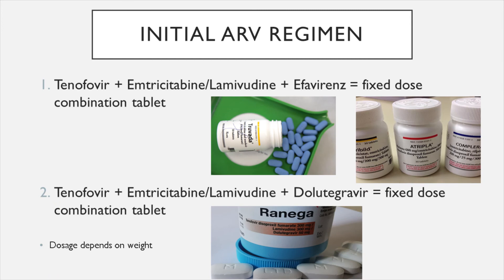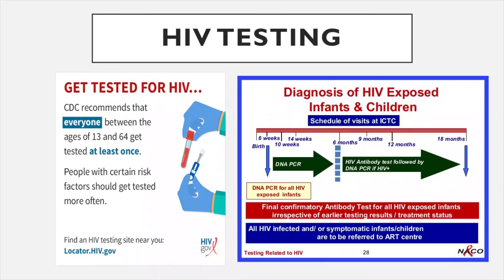The ARV regimens — fixed-dose combination tablets — are your first-line treatment. It can be a combination of tenofovir with emtricitabine or lamivudine and efavirenz, although you can pair it with dolutegravir depending on the patient's condition. When it comes to HIV testing, if the first test is positive they want to start HIV medication as soon as possible. If negative, there is a window period of 12 weeks before testing again, because the virus might be present but not enough viral copies for the test to detect.